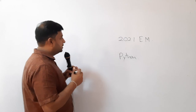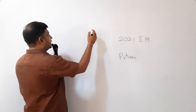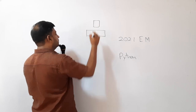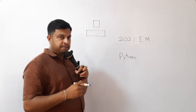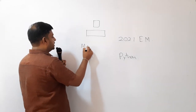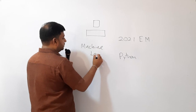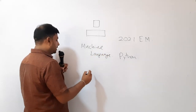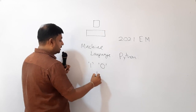We are going to start the Python lesson. First of all, you must have an understanding about the computer. The computer can only understand one language — it's called the machine language. The machine language is made using ones and zeros. It's binary.